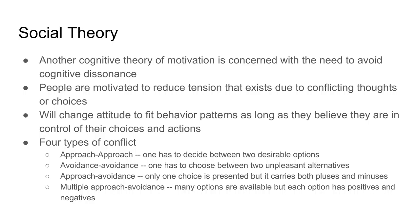Building on cognitive theory, social theories address the need to avoid cognitive dissonance. The idea is that we are motivated to reduce tension that exists due to conflicting thoughts or choices, and that people tend to change attitudes to fit behavior patterns — as long as they believe they are in control of those actions and choices. This shifts away from biology controlling us toward higher-order thinking where we control ourselves and our choices.